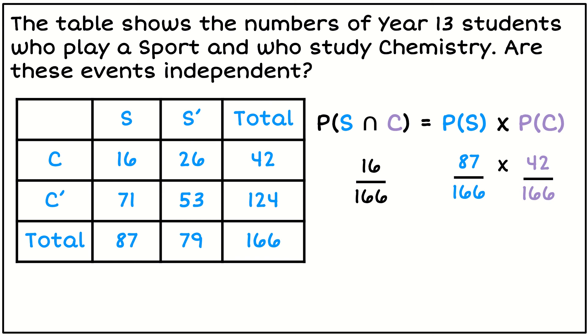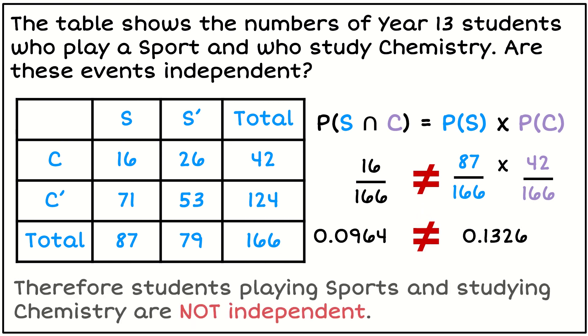So at this point it's easier for me to convert them into decimals because I prefer to compare decimal values. So 16 over 166 is 0.0964 and the other side is 0.1326. So we can see that the left hand side does not equal the right hand side, which means the events taking chemistry and playing sports is not independent. People may be more or less likely to take chemistry knowing that they take sport, and vice versa.